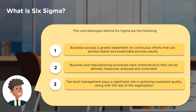There are three core ideologies behind Six Sigma. The first states that for any business to be successful, continuous efforts are required to achieve stable and predictable process results. The second states that in any business or manufacturing process, there are characteristics that can be defined, measured, analyzed, and controlled. The final ideology says that along with the rest of the organization, top-level management plays a very important role in ensuring sustained quality.